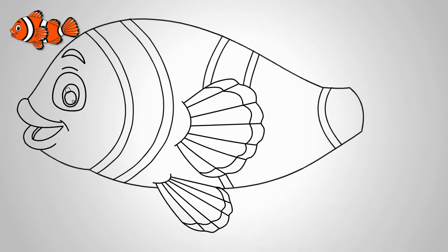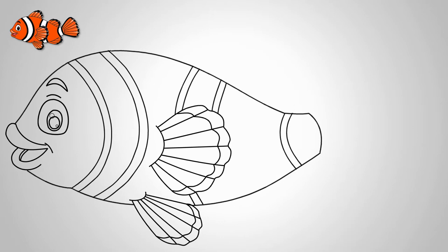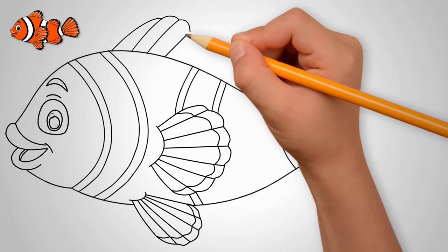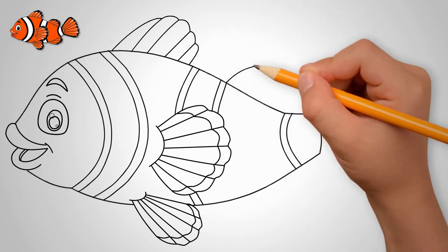At the bottom, under the belly of the fish, draw another fin. It also has many bones. They are radial to each other. Here we also draw two parallel arcs.